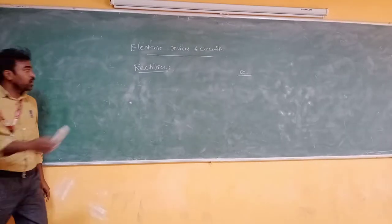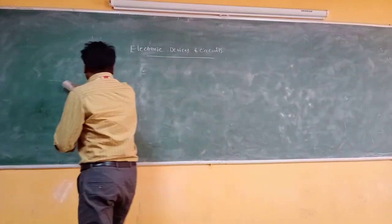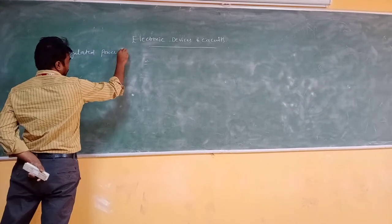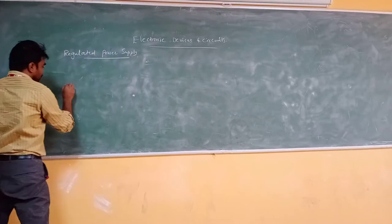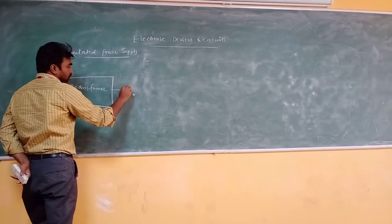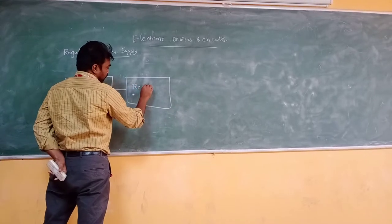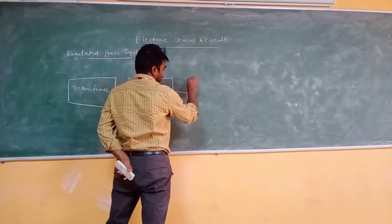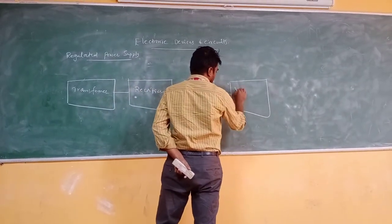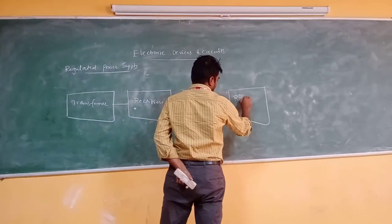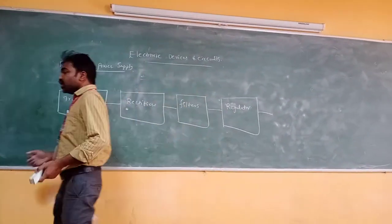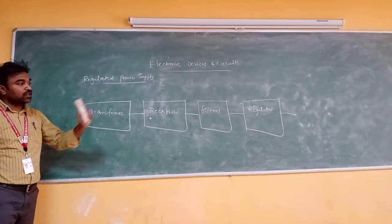There is a regulated power supply diagram that shows how to convert AC into DC. The blocks in this regulated power supply — also called a linear mode power supply — are: first, a transformer; next, a rectifier; and then a filter block.